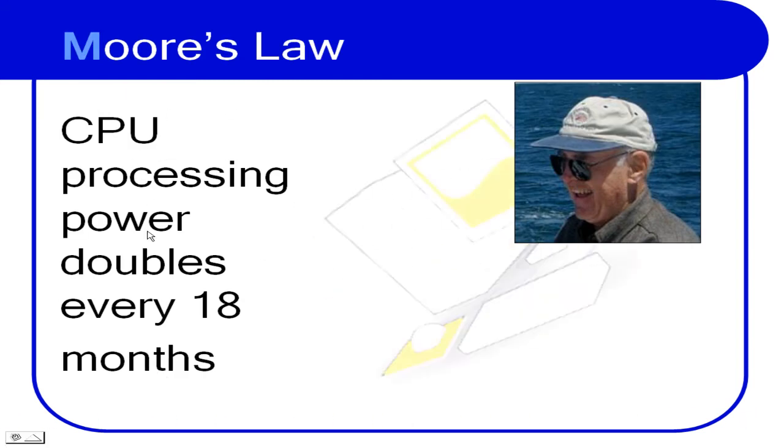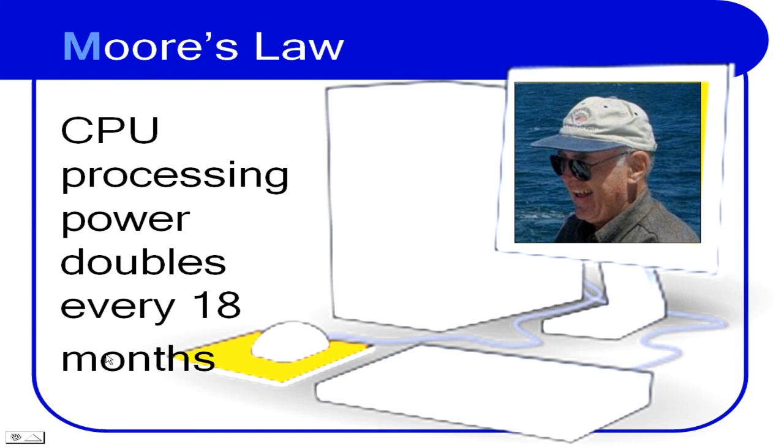Central processing power doubles every 18 months. That is Moore's law. Check it out. Go to Google.